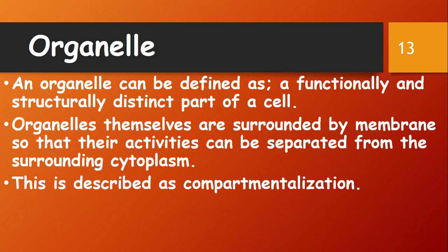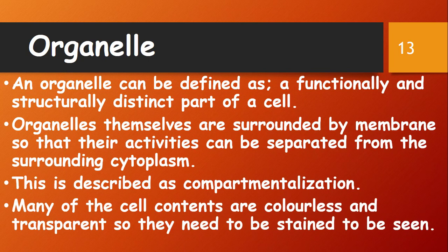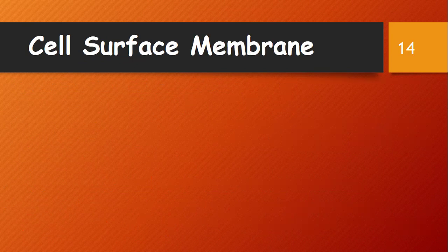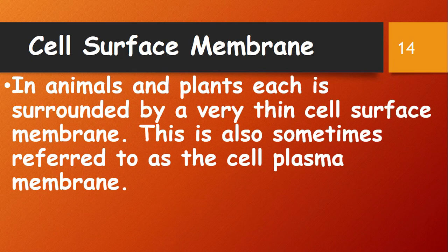Organelles are defined as functionally and structurally distinct parts of a cell. Organelles themselves are surrounded by membranes so their activities can be separated from the surrounding cytoplasm — this is described as compartmentalization. Many cell contents are colorless and transparent, so they need to be stained to be seen. For example, the word 'chromosome' means 'colored body,' but chromosomes are actually colorless — you cannot see them until you stain them with specific dyes.